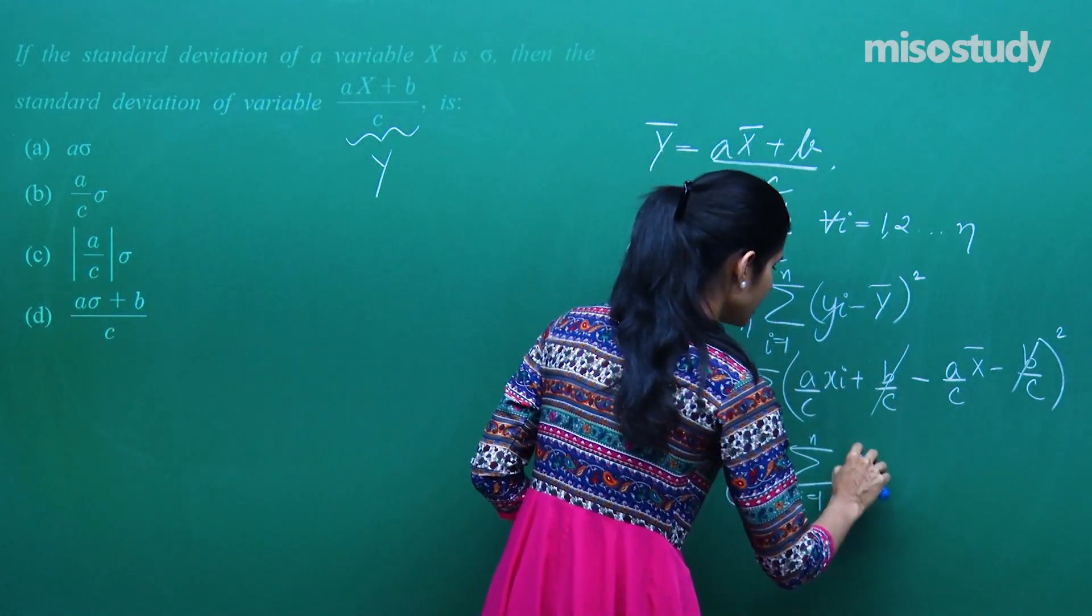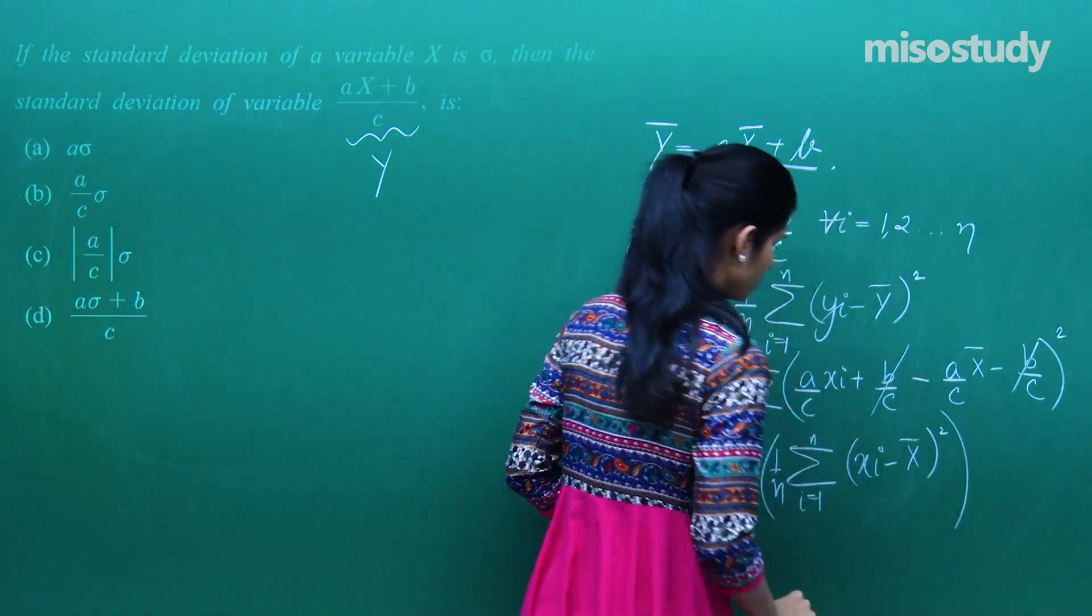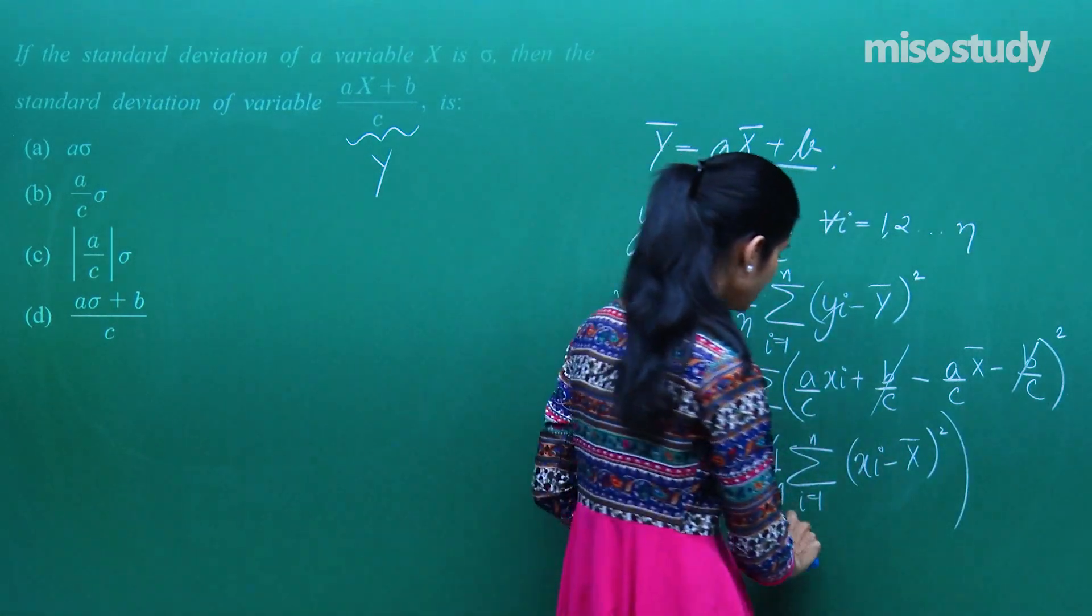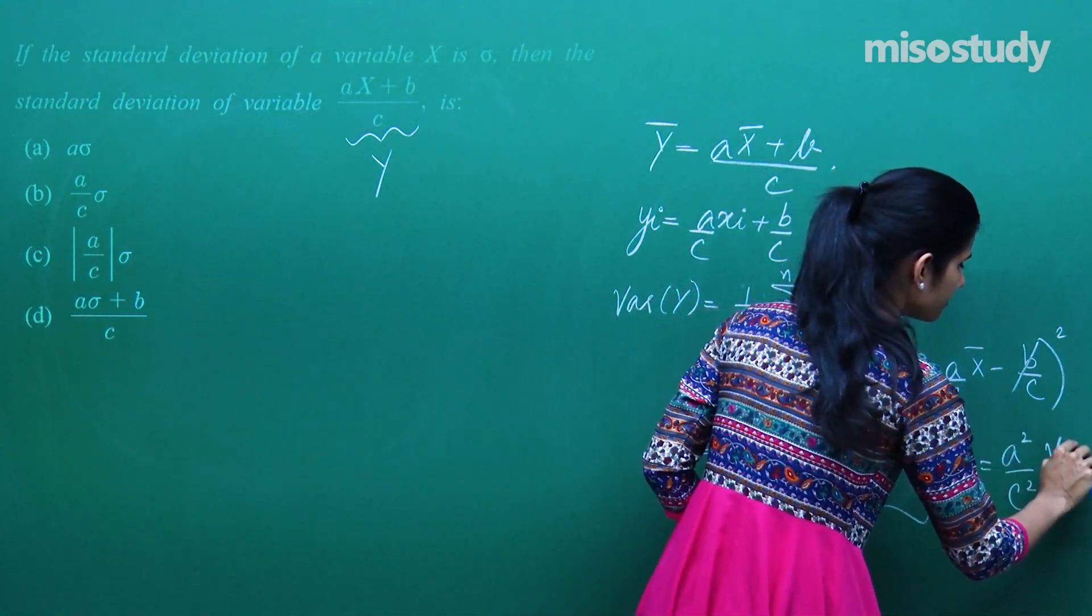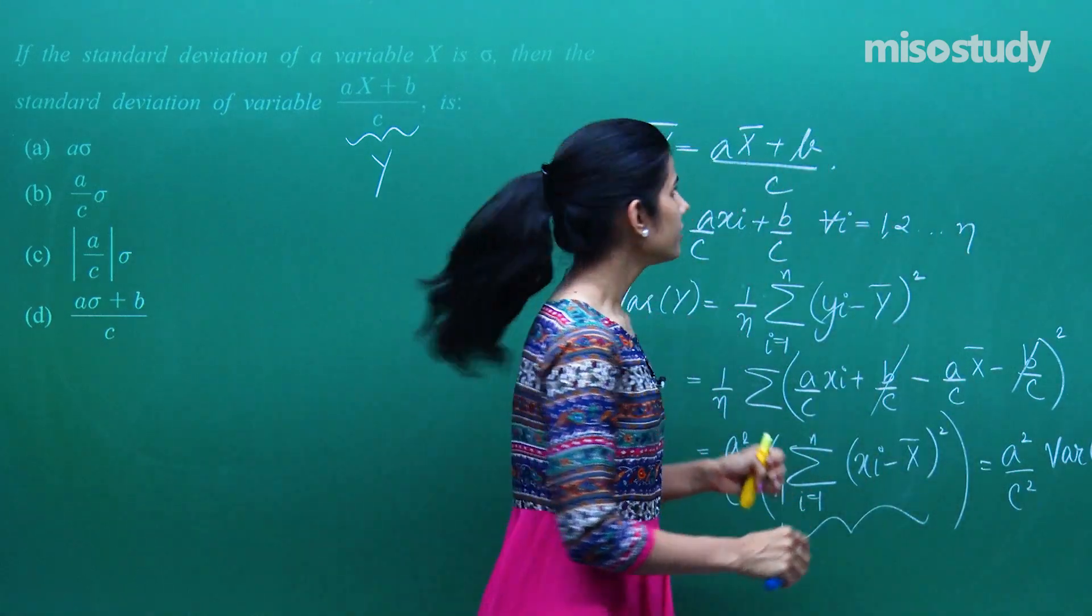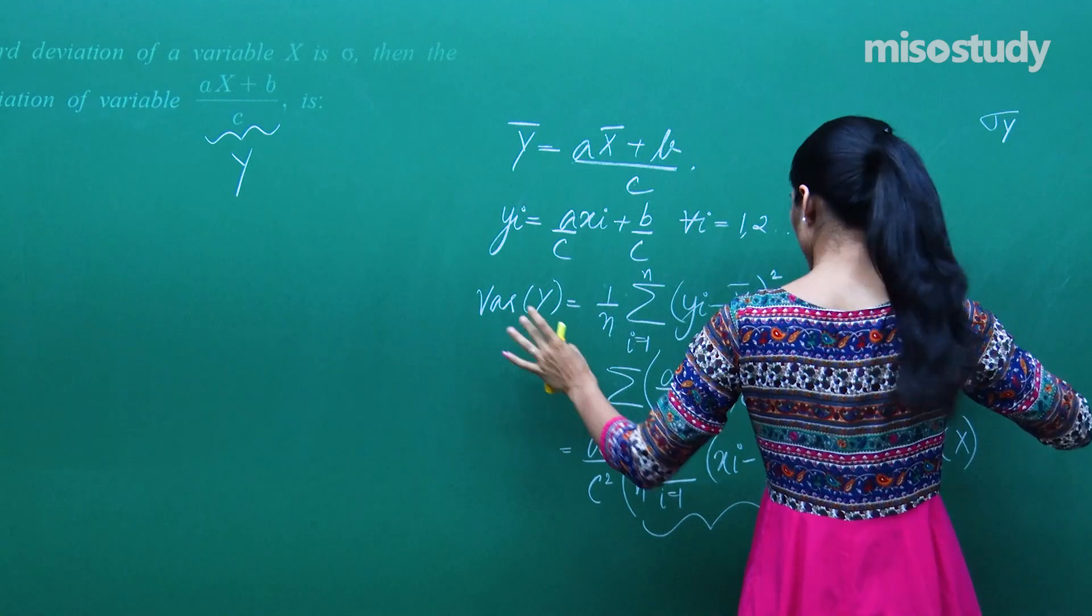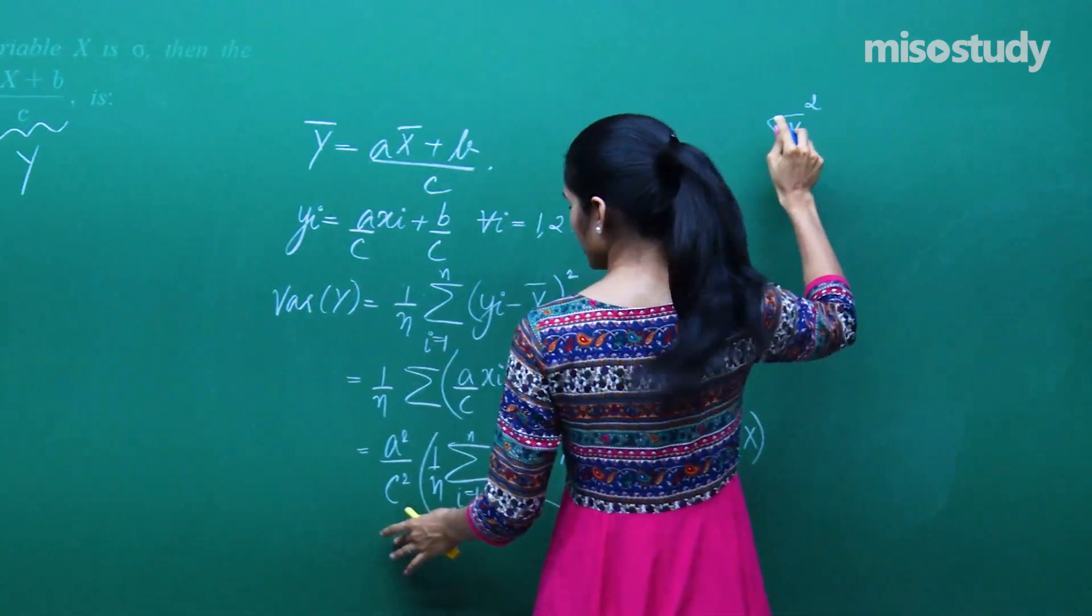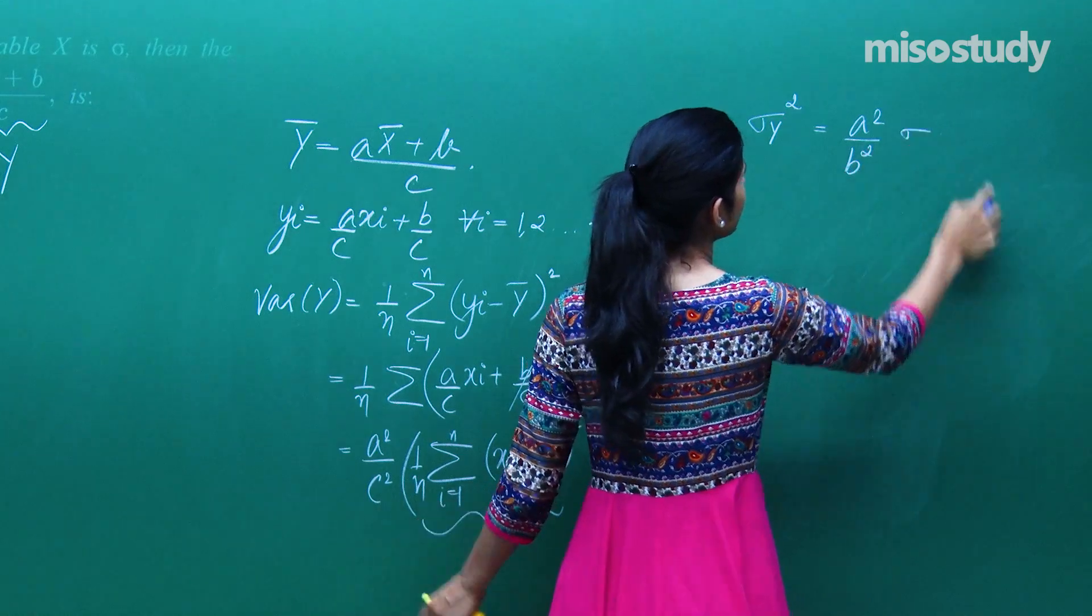Inside you will have summation i going from 1 to n. This is 1 by n outside, and then xi minus x bar ka whole square. Again, you have a square by c square. This is variance of x. So variance of y ko agar mein sigma y se denote karu, sigma y ka square. So this is equal to a square by c square times sigma.